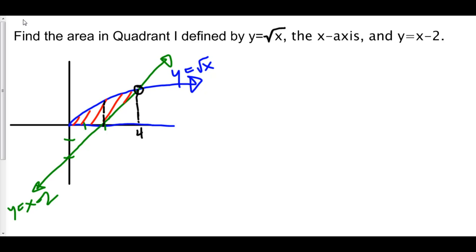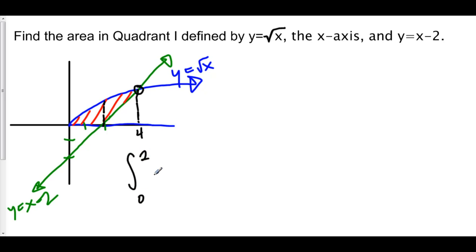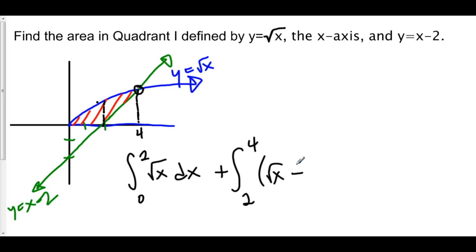So let's take a look at this area. We're taking the integral from 0 to 2, and we want the area between the curve of the square root of x and the x-axis. That is just the integral from 0 to 2 of the square root of x dx, which gives us that first region. Then we add on the integral from 2 to 4 — since they intersect at x equals 4 — of the top minus the bottom: the square root of x minus (x minus 2) dx.